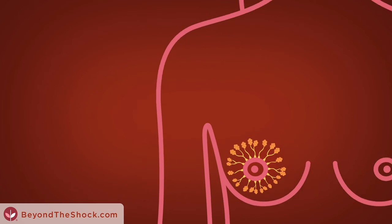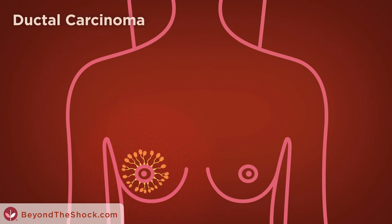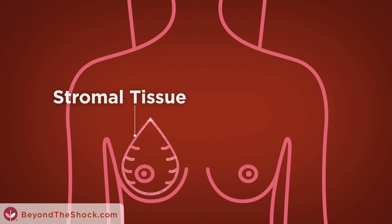If the cancer has spread beyond the milk ducts, it is known as ductal carcinoma. Less frequently, breast cancer can originate in the stromal tissue, the fatty and fibrous connective tissue of the breast.